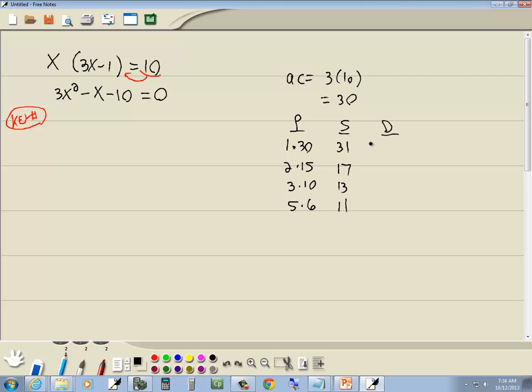D for difference. We want to subtract smaller from larger. 30 minus 1 is 29, 15 minus 2 is 13, 10 minus 3 is 7, 6 minus 5 is 1. The number we're looking for is a number in our middle term, which is the visible one, which is right here. So we're going to use 5 and 6.